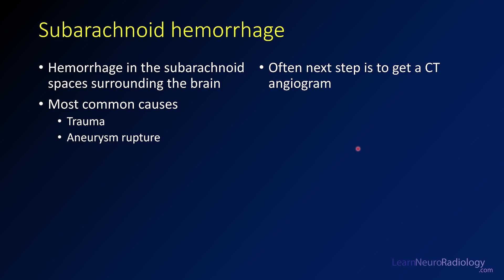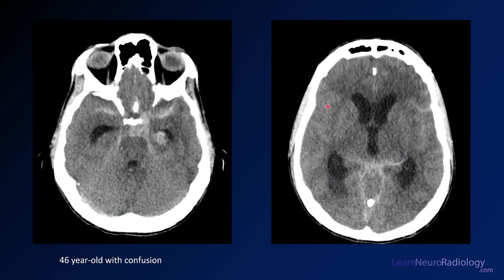One of the most common hemorrhages you'll see is subarachnoid hemorrhage — hemorrhage in the subarachnoid spaces surrounding the brain or the CSF spaces. The most common cause overall is trauma. In the absence of trauma, the most common cause is aneurysm rupture. If you see subarachnoid hemorrhage, the next step is often to get a CT angiogram to look for an underlying vascular cause. Here you see a CT from a 46-year-old with confusion: hyperdense material in the sylvian fissures, basal cisterns wrapping around the midbrain, with enlarged temporal horns indicating hydrocephalus — a classic appearance of subarachnoid hemorrhage.